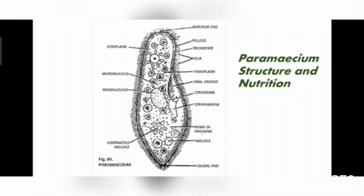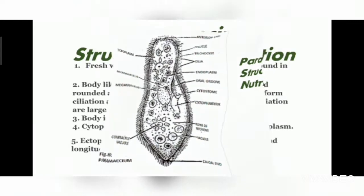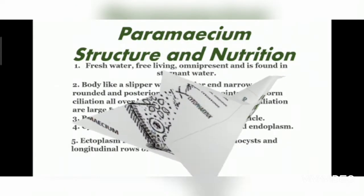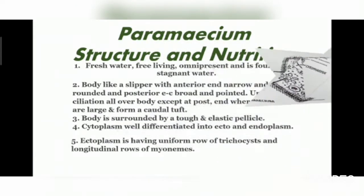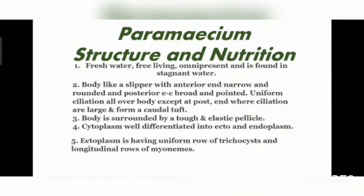As you can see in the picture, its body is like a slipper, with the anterior end narrow and rounded, and the posterior end broad and pointed. There is uniform ciliation all over the body, except at the posterior end where the cilia are large and form a caudal tuft.